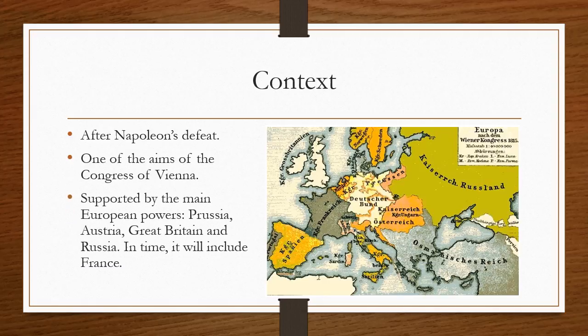Obviously, this system of alliances was going to be supported by the main European powers, which were Russia, Austria, Great Britain, and Prussia. And in time, it would include France, restoring France to an important position within the European framework.